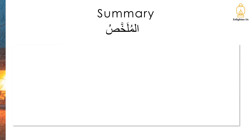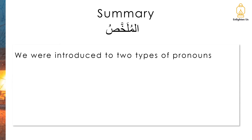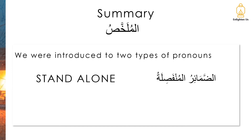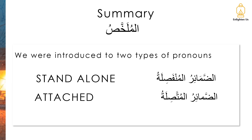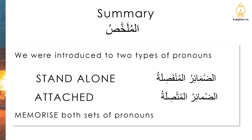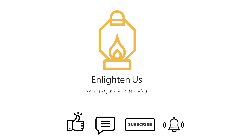So we have come to the end of our lesson. You have been introduced to two types of pronouns: the standalone الضمائر المنفصلة, and the attached الضمائر المتصلة. As always, wherever there's a chart, there's an instruction to memorize — go back and memorize both sets of pronouns. Thank you for joining us for this lesson. Don't forget to like, comment, subscribe, and hit that notification bell. Do check out the description box for additional resources, and see you in the next one, inshallah. Goodbye.